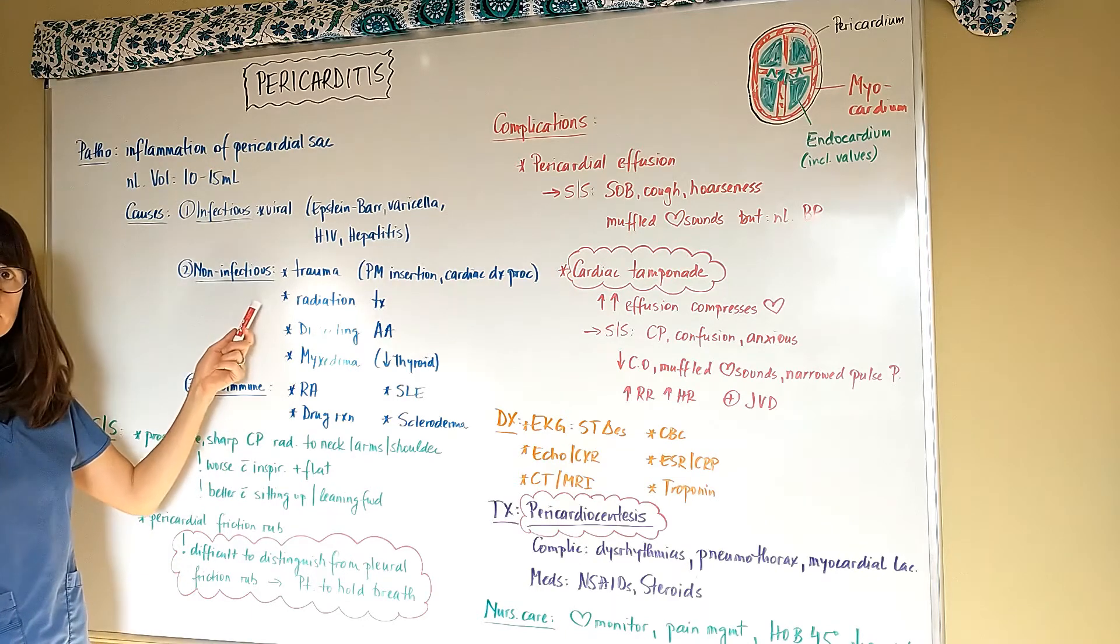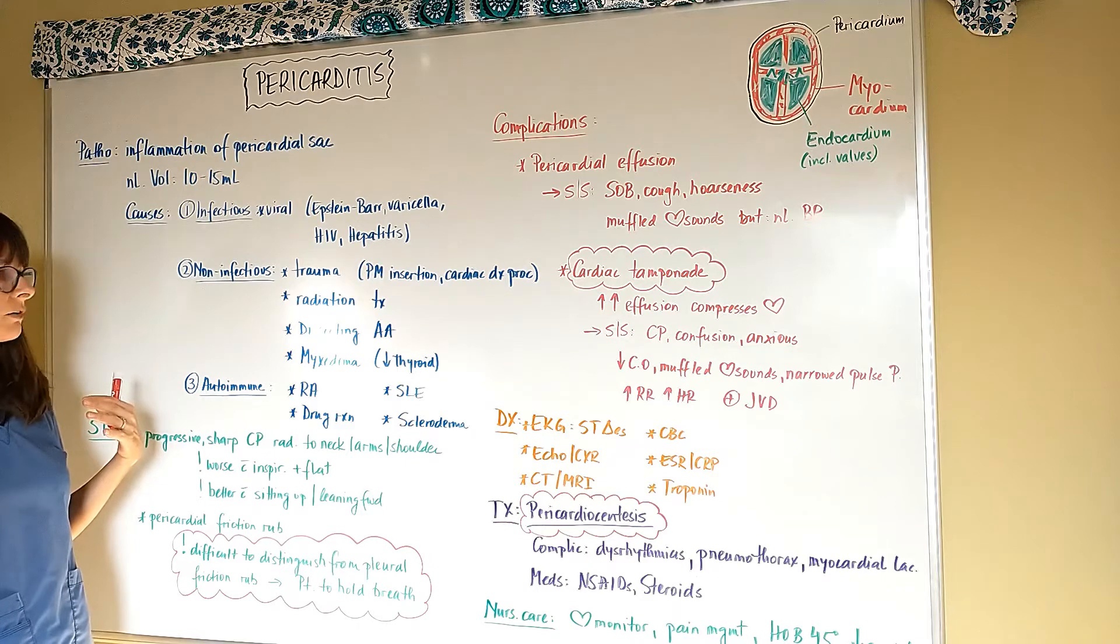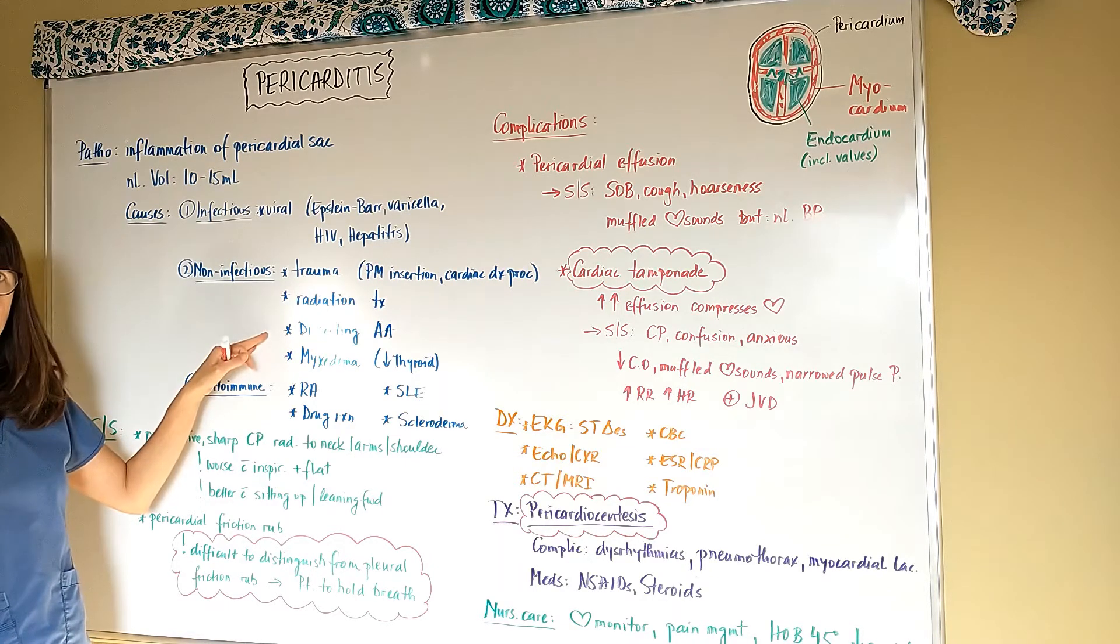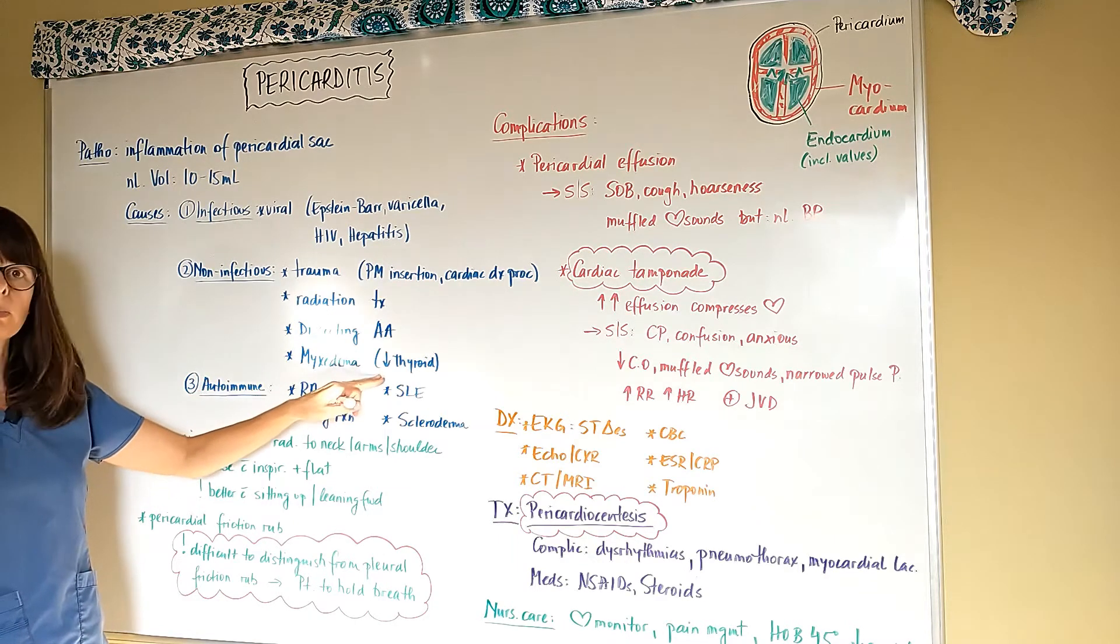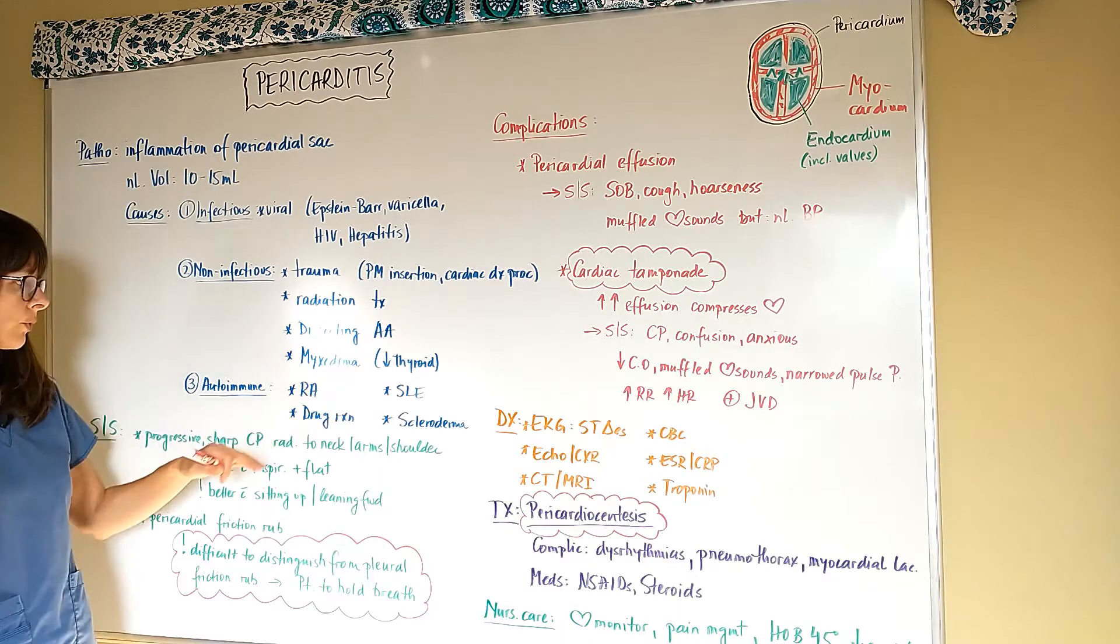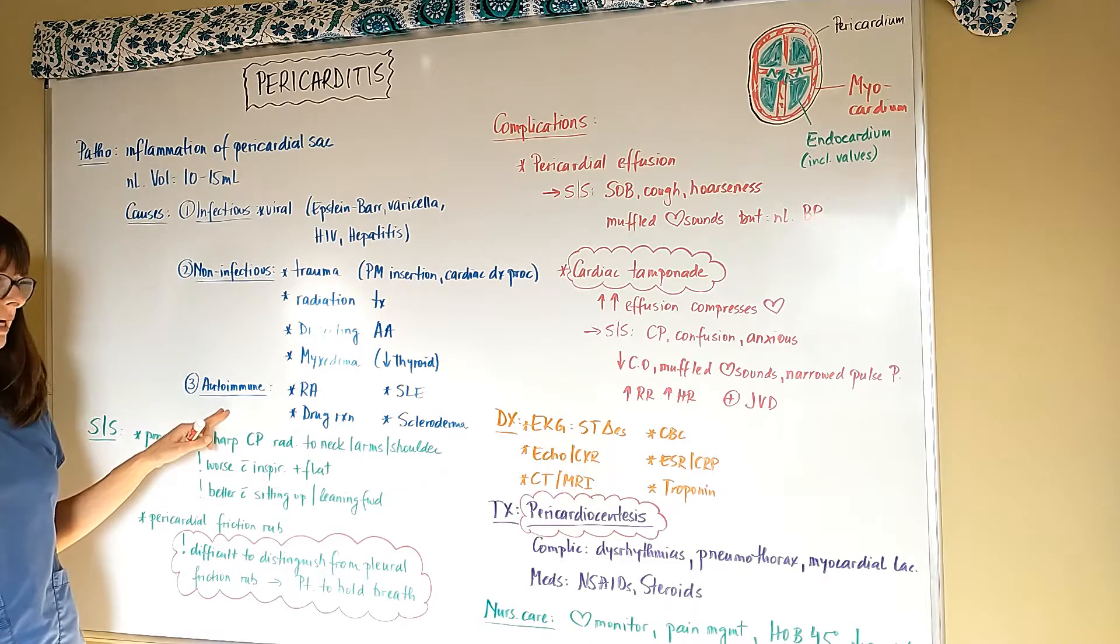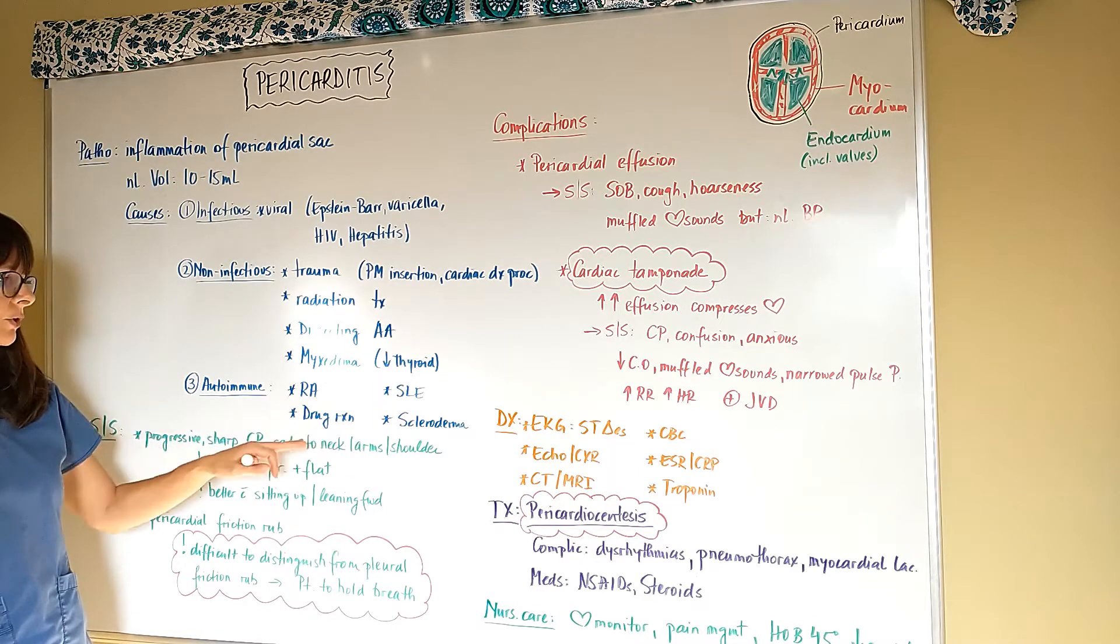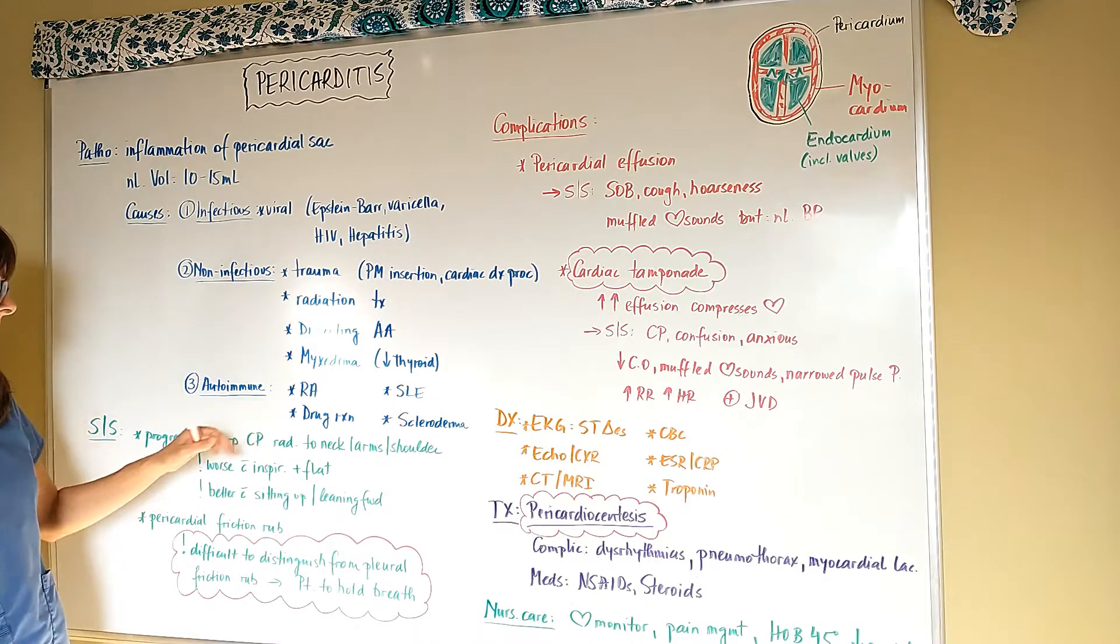Radiation treatment—so any radiation to the chest can cause inflammation of the pericardium. A dissecting aortic aneurysm can cause pericarditis, as well as myxedema, which is a complication of hypothyroid. Autoimmune disorders are also known to cause pericarditis, and this will be something like rheumatoid arthritis, lupus, scleroderma, or any kind of drug reaction that the patient might experience.